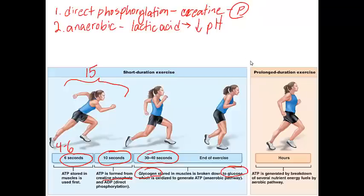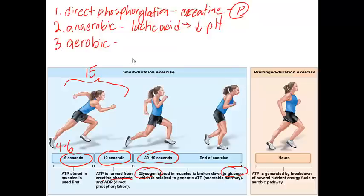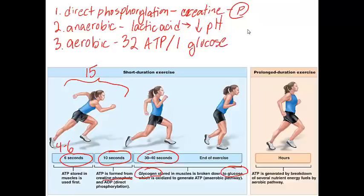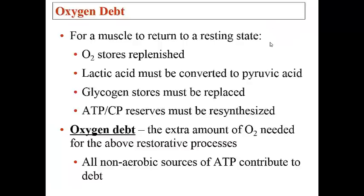The lactic acid lowers the pH of the bloodstream, causing the burning sensation we feel in our muscles — especially during an activity we may not be well suited for. For example, an unconditioned person who suddenly tries to run a mile may feel this burning sensation after the first minute. The third type of muscle metabolism is aerobic respiration, which uses oxygen and produces a lot of ATP — about 32 ATP per one glucose molecule.